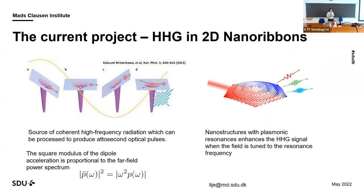This is why we are going beyond perturbation theory and doing direct time-dependent simulations. The current project looks at high harmonic generation in 2D nanoribbons. You can explain it through this three-step model, which is really for high harmonic generation in the gas phase — in the solid state it's more complicated, but this conveys the idea. If you have a very strong electric field, you perturb your potential and an electron can be tunneled away from the nuclei. When the phase of the field changes, it gets driven back and forth, and at some point it will recollide with the nuclei and emit radiation at integer multiples of the impinging field frequency.